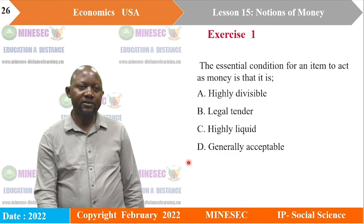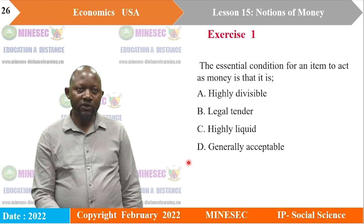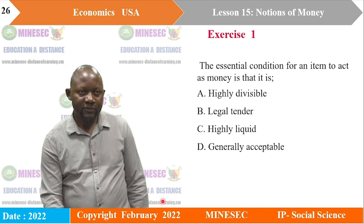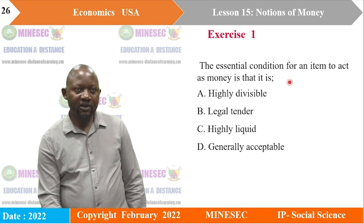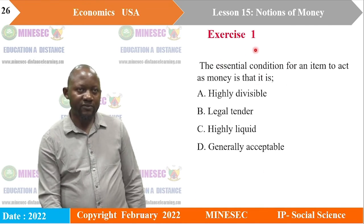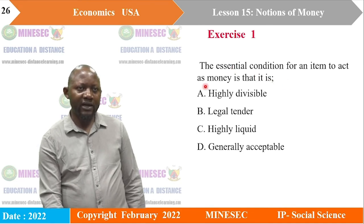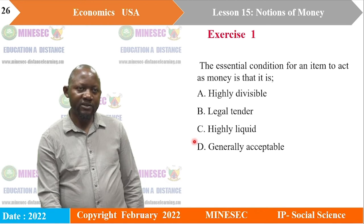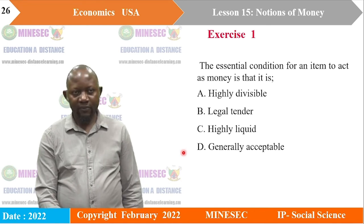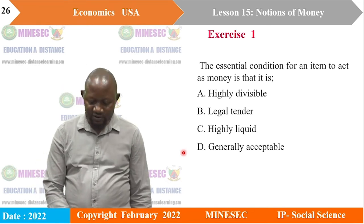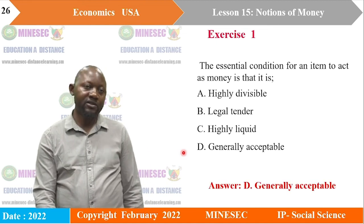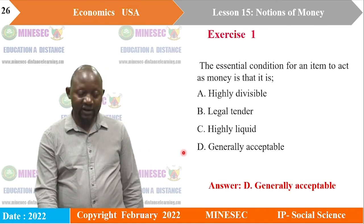Now let's go straight to some exercises — MCQ questions. The essential condition for an item to act as money is: A) highly divisible, B) legal tender, C) highly liquid, or D) generally acceptable. We saw the most important characteristic is general acceptability, so D is the correct answer.